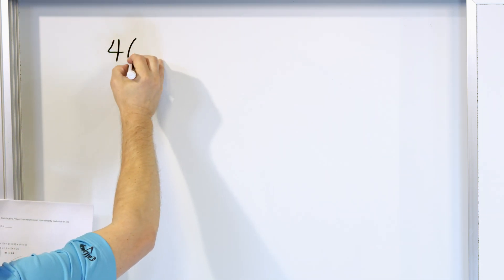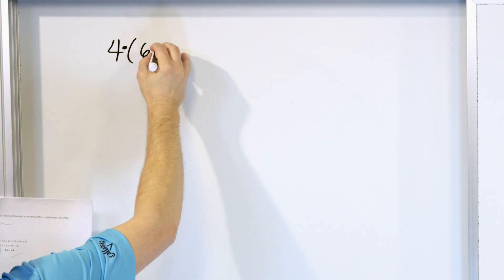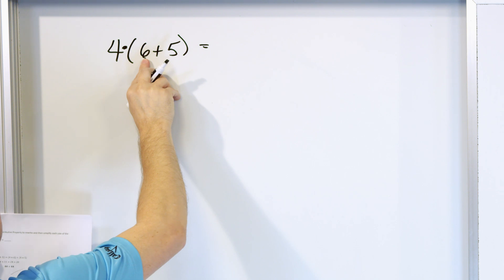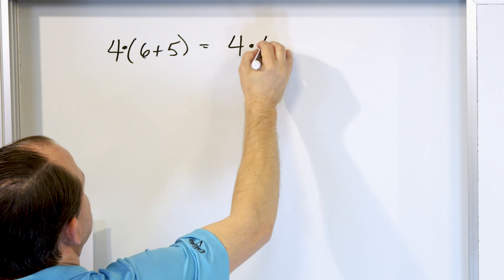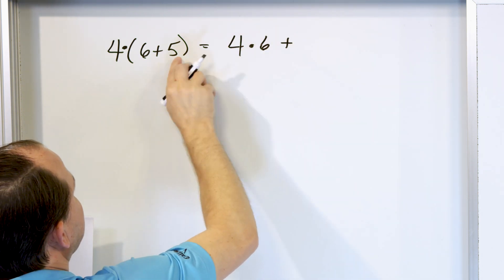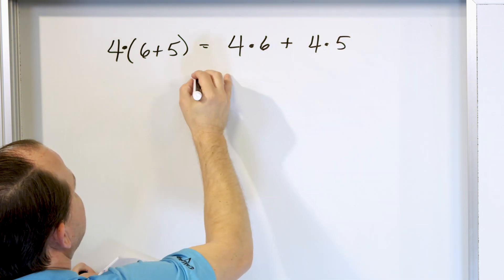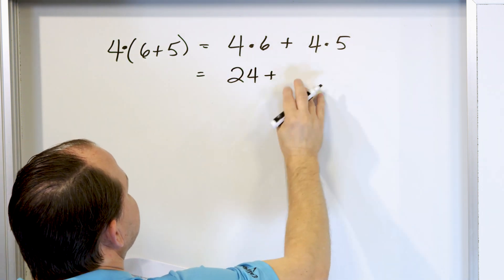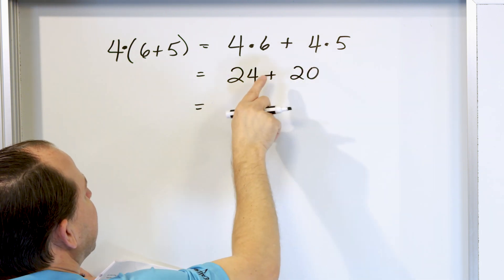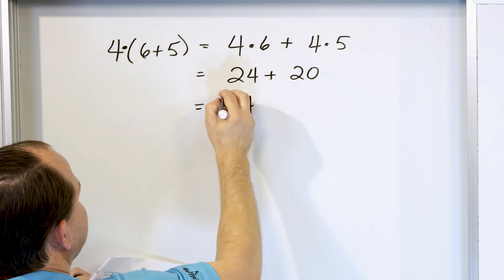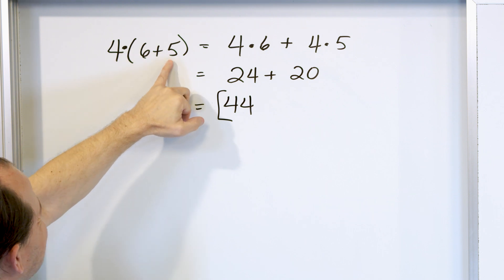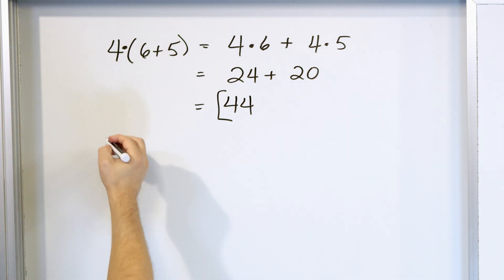Let's say we have 4 times (6 plus 5). We multiply times the 6, then times the 5, giving 4 times 6, plus 4 times 5. 4 times 6 is 24, and 4 times 5 is 20. 20 plus 24 gives us 44 — that's the final answer. You can check it: 6 plus 5 is 11, and 11 times 4 is 44. Correct.